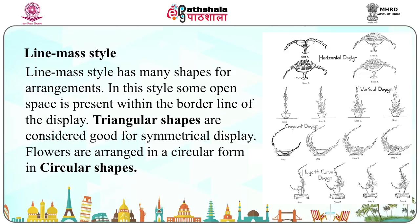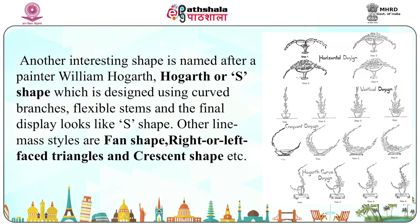Line-mass style has many shapes for arrangements, with some open space present within the border line of the display. Triangular shapes are considered good for symmetrical display. Flowers are arranged in a circular form in circulation shapes. Another interesting shape is named after painter William Hogarth — the Hogarth or S-shape — designed using curved branches and flexible stems so the final display looks like an S-shape. Other line-mass styles include fan shape, right or left-faced triangles, and crescent shape.